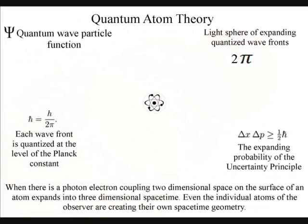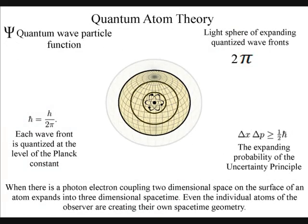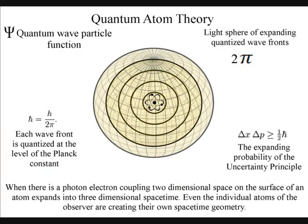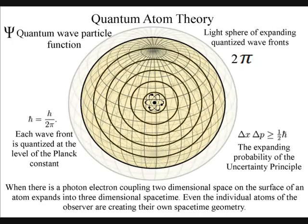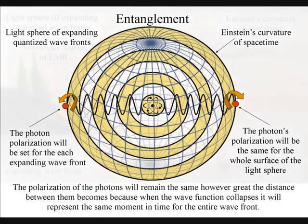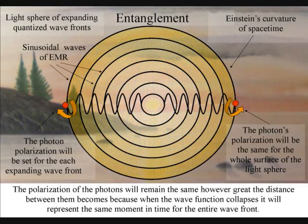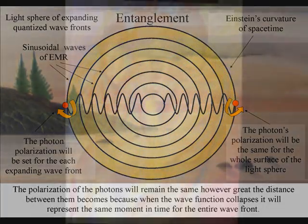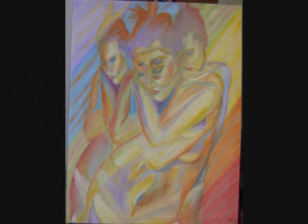Light moves in straight lines, but in three-dimensional space it will expand out in all directions, forming light spheres. The polarization of the light will be the same for the entire surface of the light sphere, creating quantum entanglement and the symmetry and geometry of space-time.